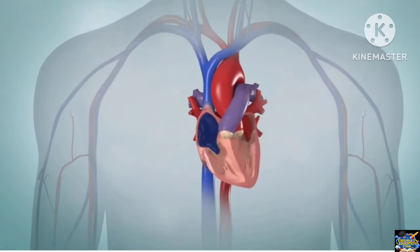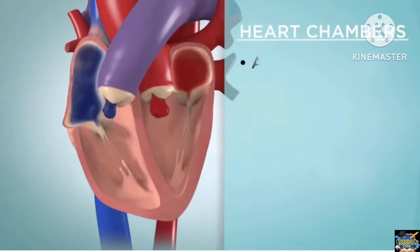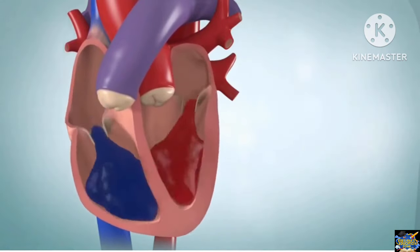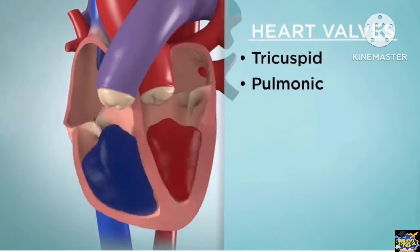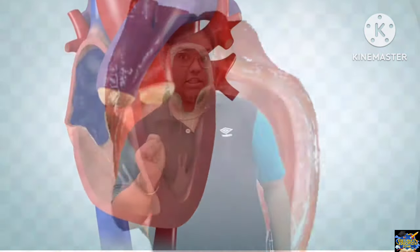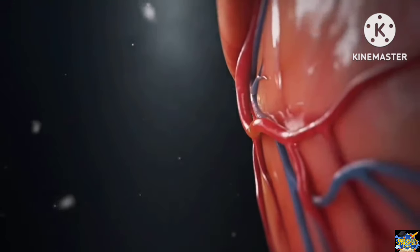Similarly, in our heart, deoxygenated blood comes in with low pressure. The heart then pumps — contraction, relaxation, contraction, relaxation — and with contraction, the blood goes away from the heart with full pressure. In veins, deoxygenated blood comes in; in arteries, it carries oxygenated blood going out. Though it is called oxygenated blood, it may still contain some waste materials like amino acids, but we can call it oxygenated blood. Okay, so that's it for today, bye-bye.